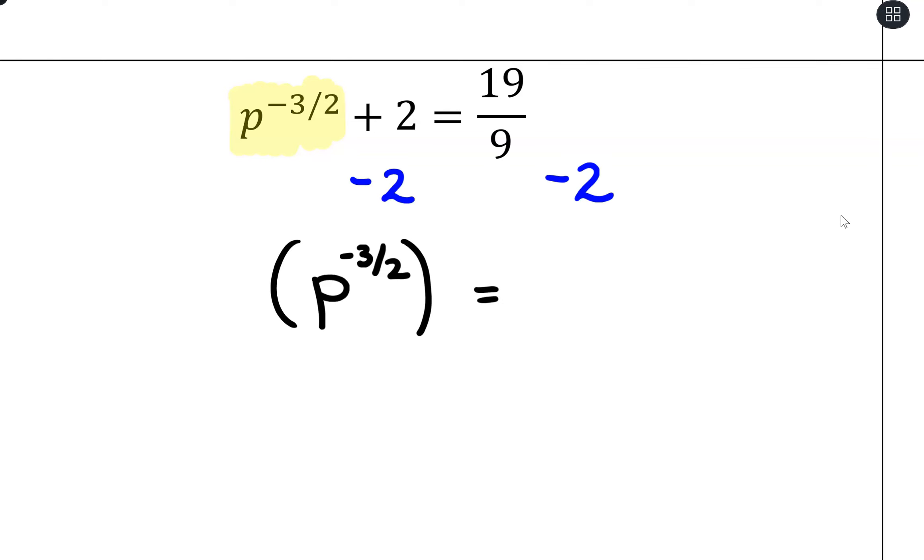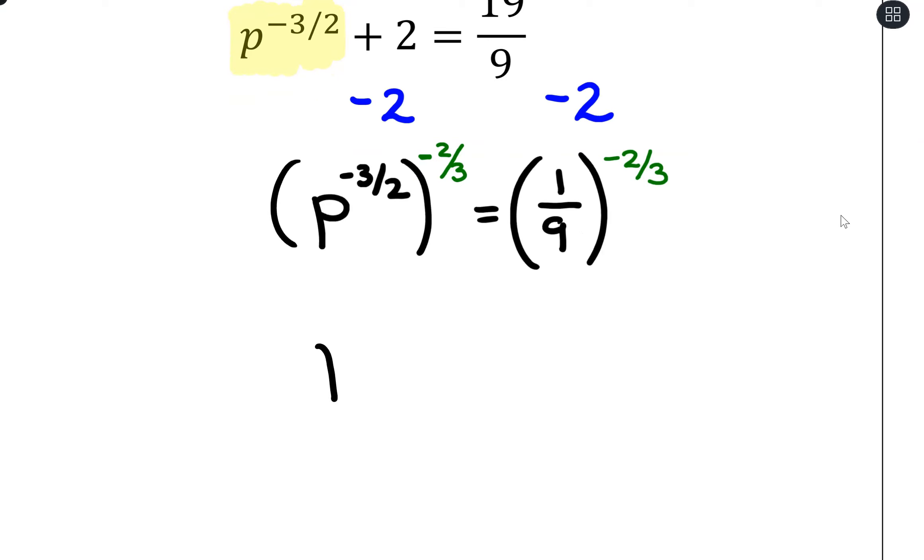19 ninths minus 2, so that would be 18 ninths. So that'll be a 1 ninth left over there. All right, then the exponent will need to be negative so that it multiplies to a positive. And then flip for a 2 thirds. So we have a negative 2 thirds here. And that will give us just p on the left-hand side. And then over here we'll have a positive 9 to the positive 2 thirds. By flipping the fraction, we get rid of that negative.